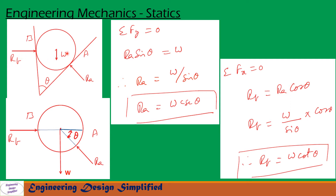Now let us draw a free body diagram of this sphere. Weight of the sphere is acting downwards, that is w. Ra is acting towards this direction and the angle between Ra and horizontal is theta — that is equal to this theta. And Rb is acting horizontal towards right.